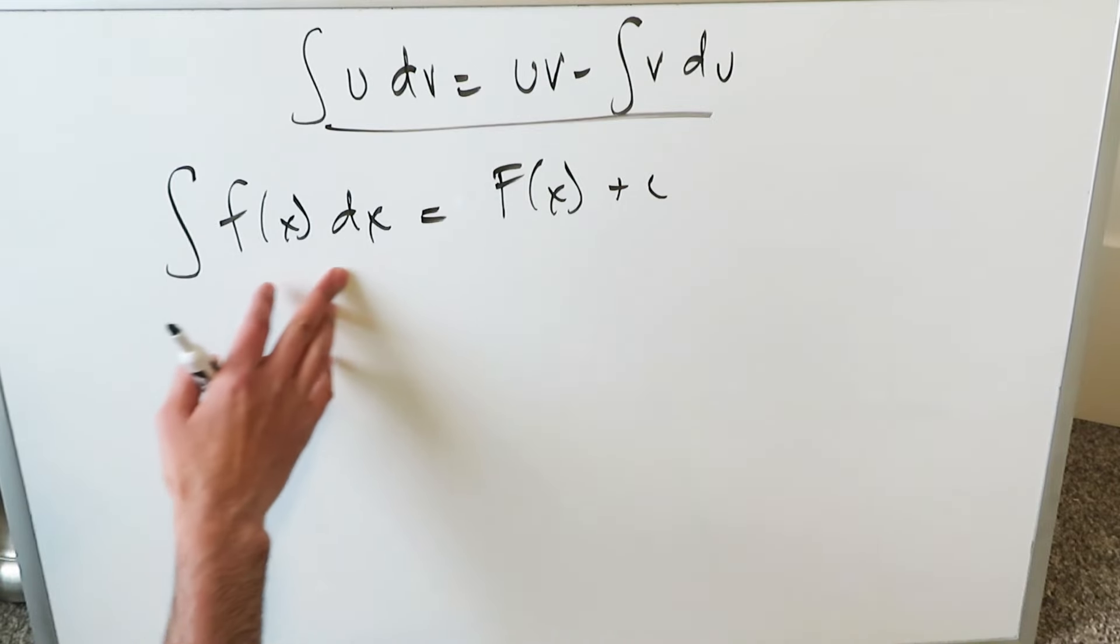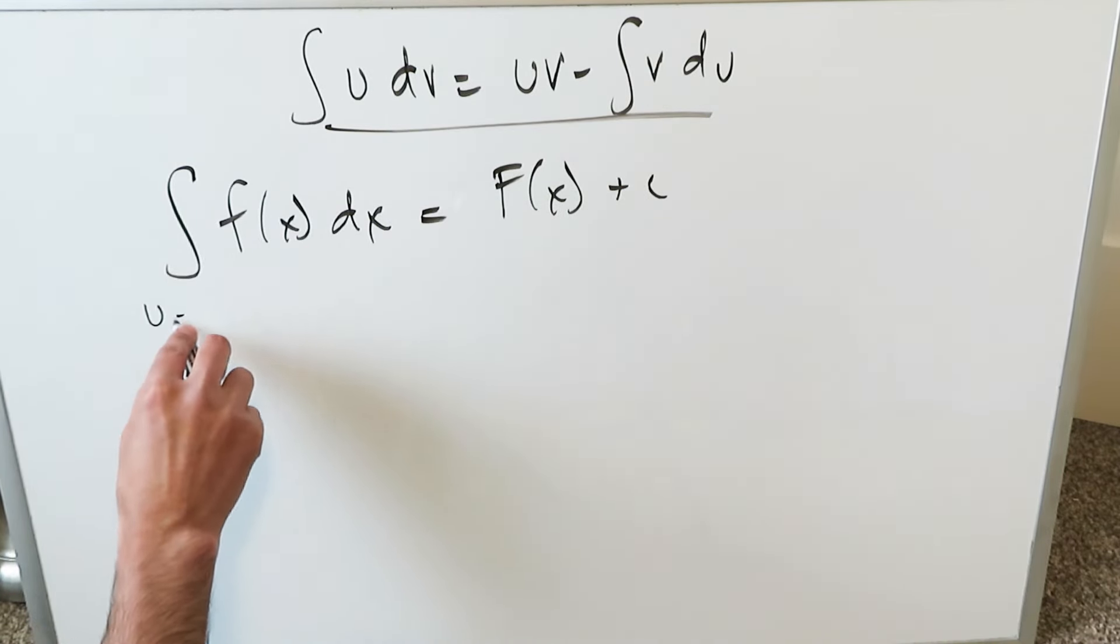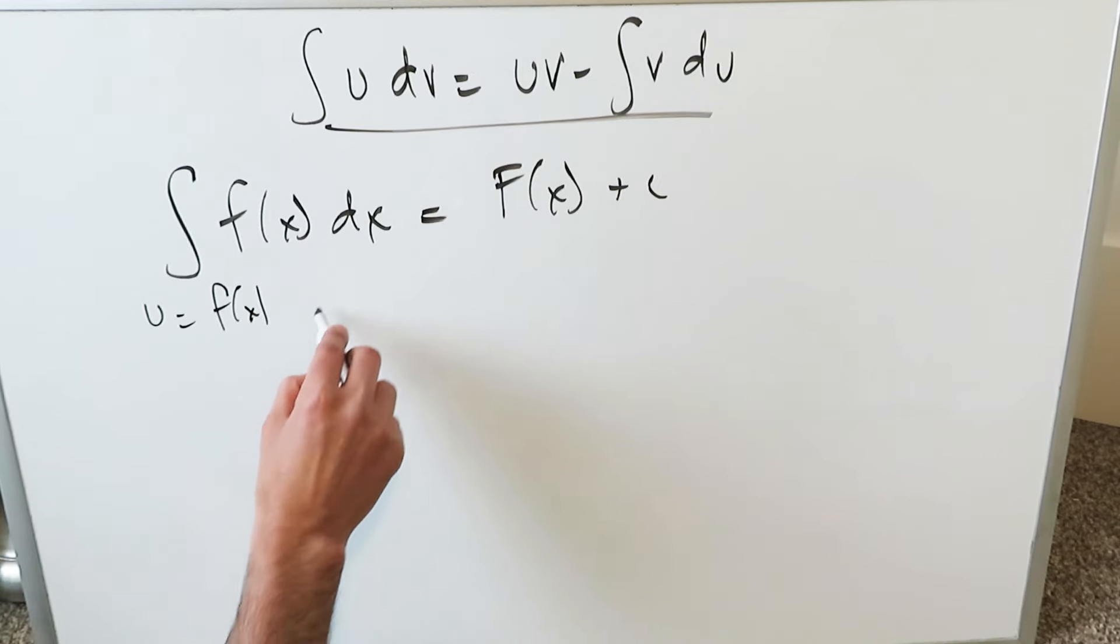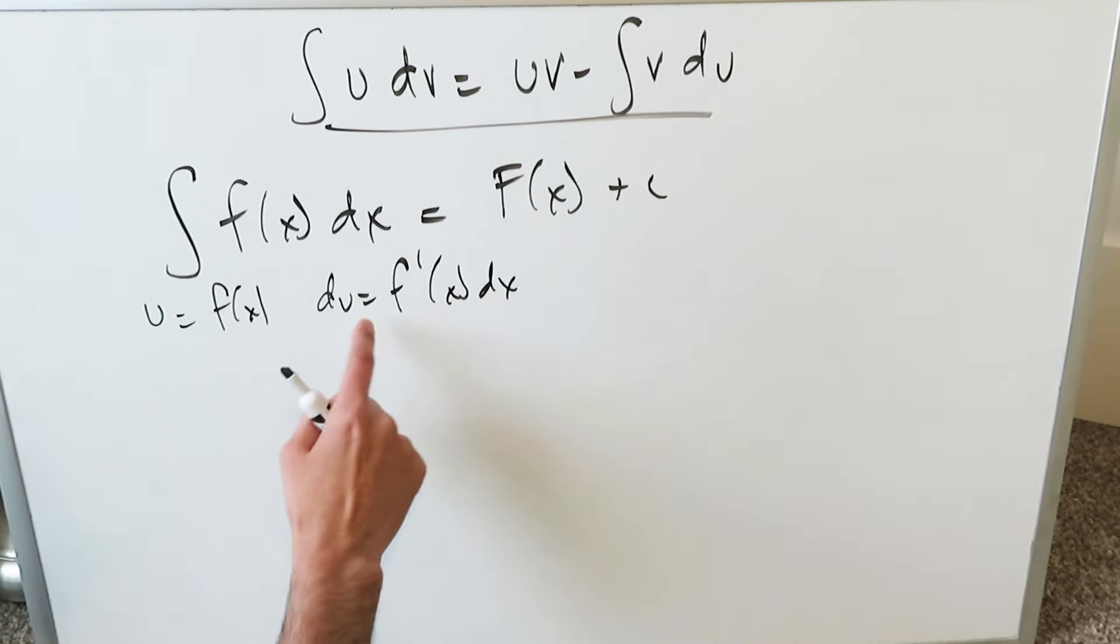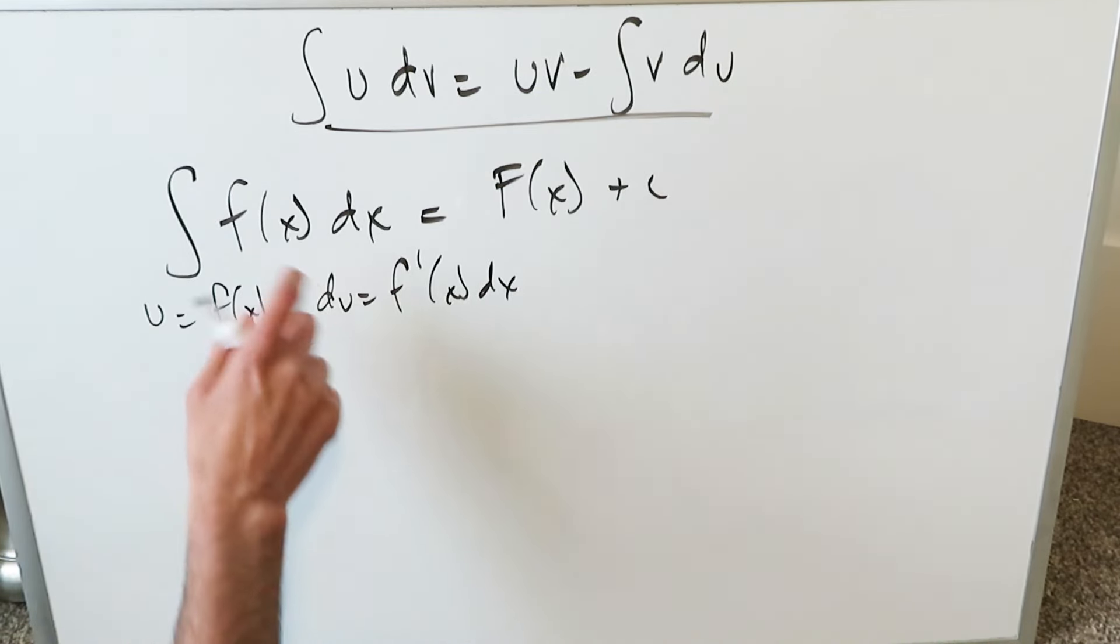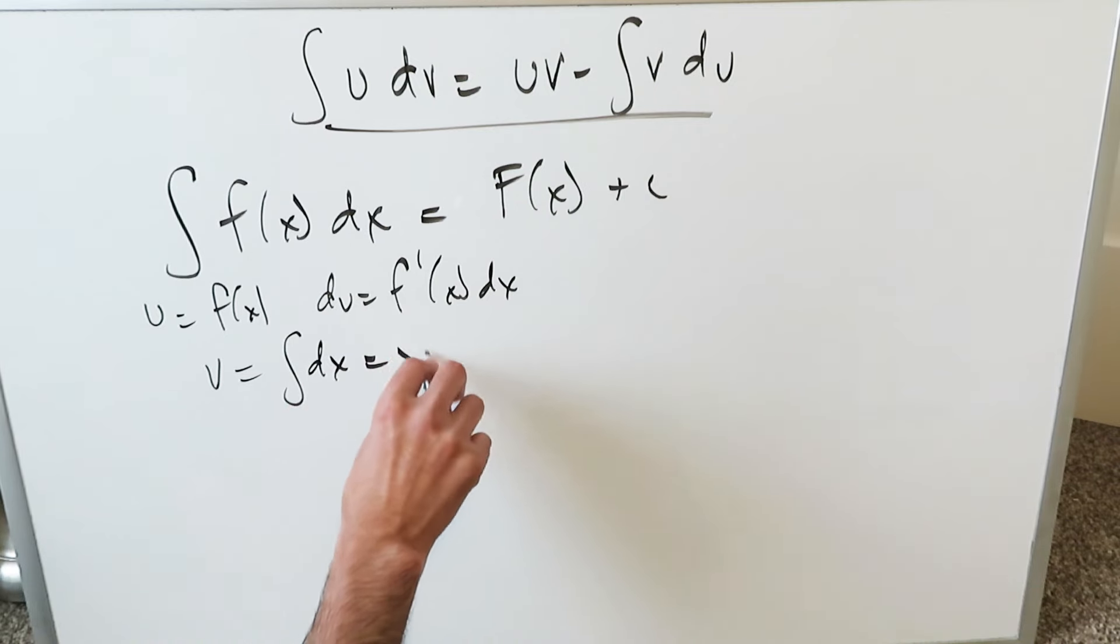Now run this integral through your integrating by parts technique. U is equal to your function. Then du is equal to the derivative of this function dx. Notice how we're bringing in the terminology. V here is going to be integral of what remains, which will be integral dx, which is x.